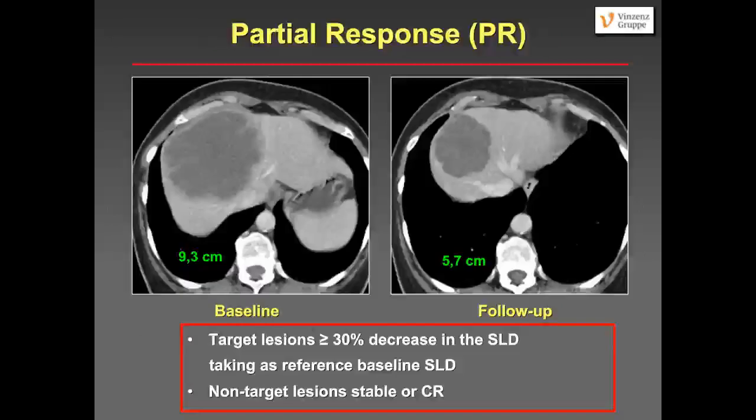What is partial response? Target lesions getting smaller by at least 30%, with baseline taken as reference. A big metastasis at baseline of more than nine centimeters shrinks considerably to 5.7 centimeters — more than 30% decrease, qualifying as partial response. Moreover, the lesion is now completely cystic, which indicates a good tumor response on chemotherapy, though this is not part of the RECIST evaluation.